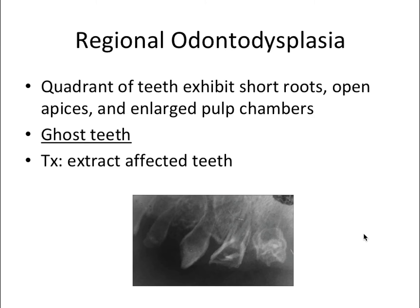Next we have regional odontodysplasia, which involves just a quadrant of teeth exhibiting short roots, open apices, and enlarged pulp chambers. The pulp chambers are so enlarged that the teeth look like ghost teeth — they just look like little ghosts on the radiograph. Ghost teeth is a buzzword that exam makers like to test, and I got a test question on it. Treatment is extracting the affected teeth.